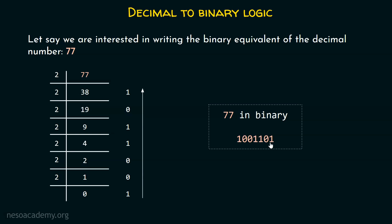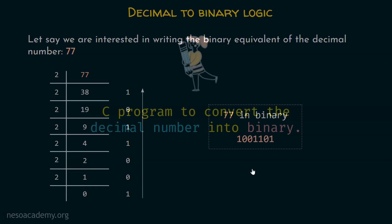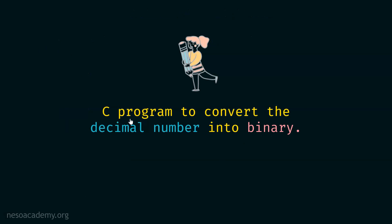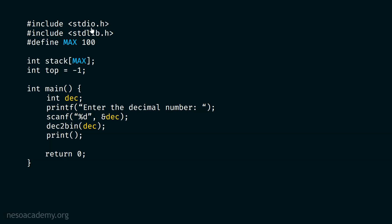I hope it's clear how to convert a decimal number to its equivalent binary number. Now we are interested in writing a C program to do this conversion. We include the required libraries, define MAX as 100, declare the stack array of size MAX, and have a top variable initialized to minus 1. The stack and top are global variables.